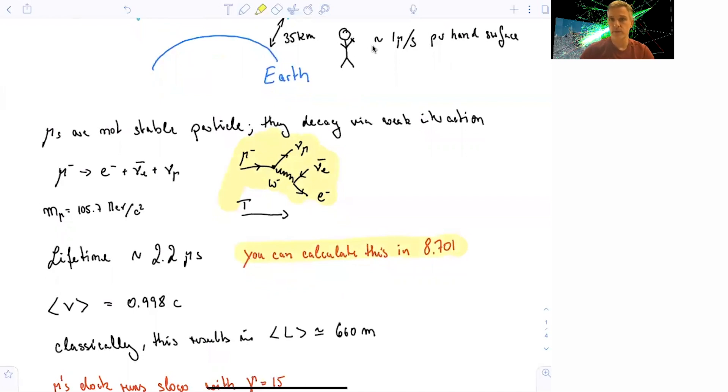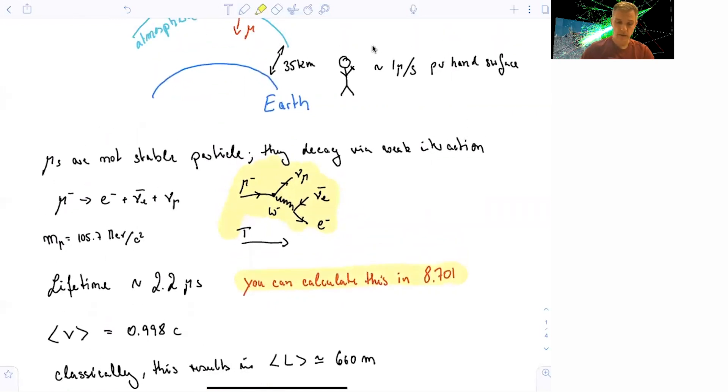The average velocity of the muons when they're being produced is close to the speed of light, or 0.998 times the speed of light. And if you do a classical calculation and you want to figure out how long the muons on average fly, you'll find that this is about 660 meters.